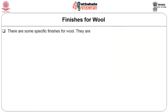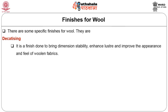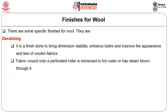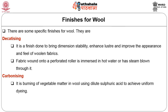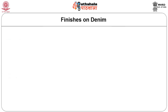There are some specific finishes for wool. Decatizing is a finish done to bring dimensional stability, enhance lustre and improve the appearance and feel of wool fabrics. Fabric wound on perforated rollers is immersed in hot water or has steam blown through it. Carbonizing is the burning of vegetable matter in wool using dilute sulphuric acid to achieve uniform dyeing.